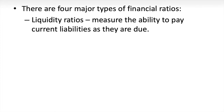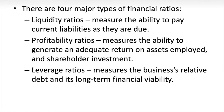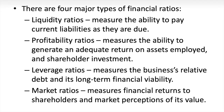There are four major types of financial ratios. The liquidity ratio measures the ability to pay current liabilities as they come due. The profitability ratio measures the ability to generate an adequate return on assets employed and on shareholder investment. Leverage ratios measure the business's relative debt and help us understand long-term financial viability — a company unable to pay its debts may go into bankruptcy. And fourth are market ratios, which measure financial returns to shareholders and market perception of value.